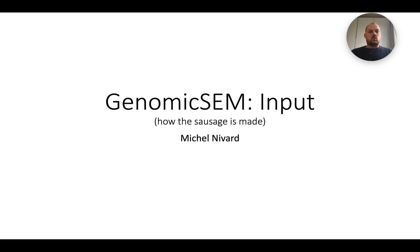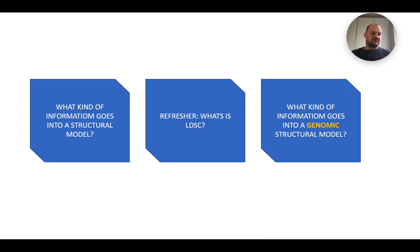To discuss what goes into Genomic SEM, it's good to discuss two other things: namely what kind of information goes into a structural equation model in general. You can use raw data, but you could also use the covariance matrix of the raw data to fit the structural equation model or regression model. And it's good to discuss what LD score regression is exactly — a very commonly used technique to estimate genetic covariance and/or heritability. It's one of the main ways Genomic SEM can estimate from raw GWAS summary statistics the genetic covariance between traits and the heritabilities, which you can then use to fit a structural equation model.